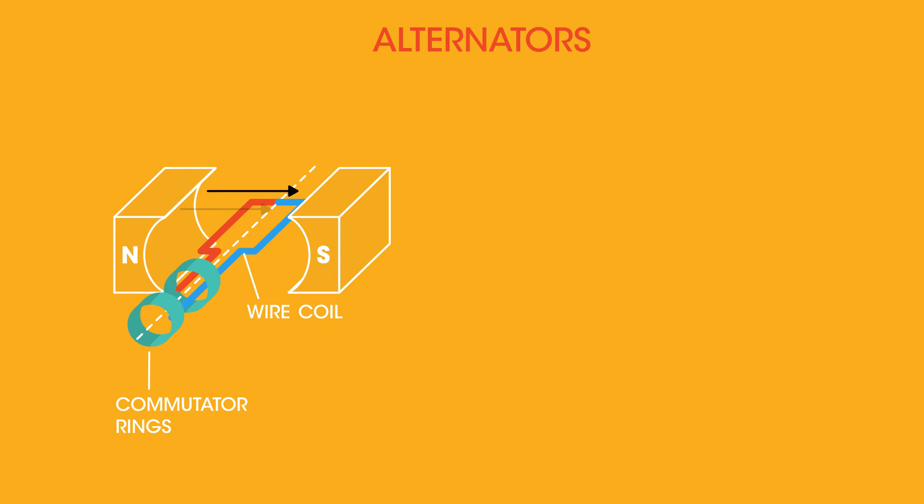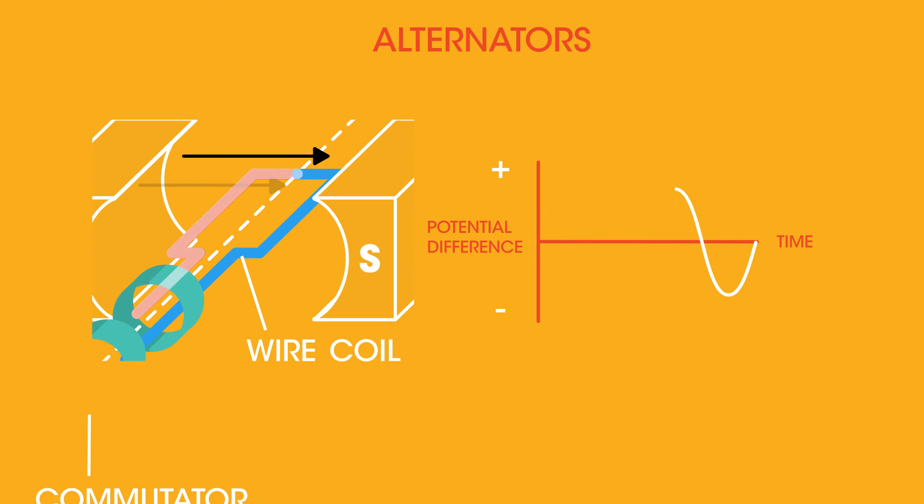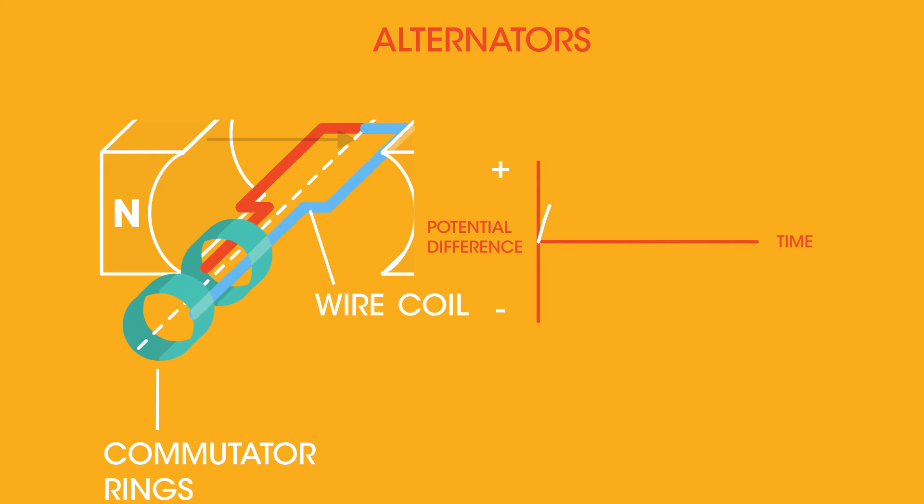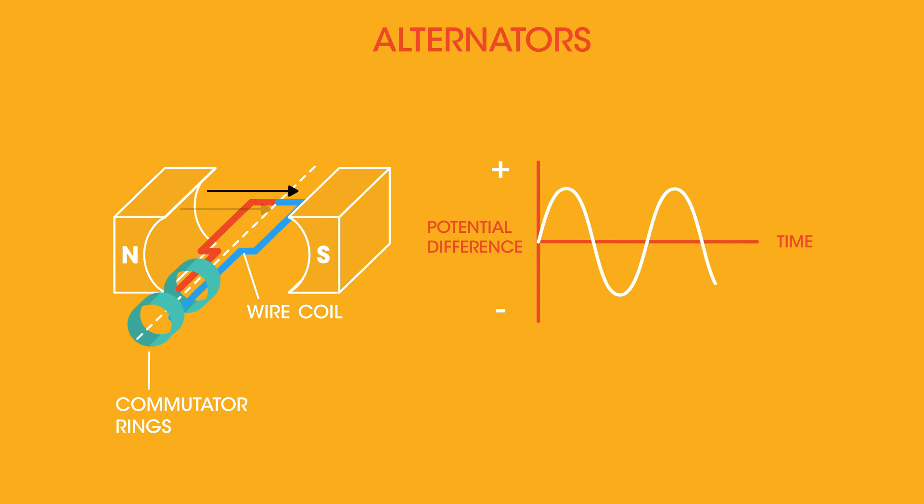When the wire coil passes through the magnetic field, a potential difference is induced. It's important to see this part of the wire coil always connects to the first commutator, and this part of the wire coil always connects to the second commutator. When the wire coil cuts the magnetic field horizontally, the potential difference is a maximum.